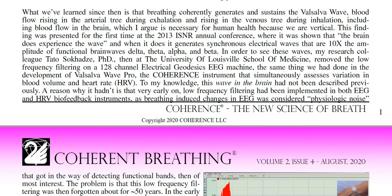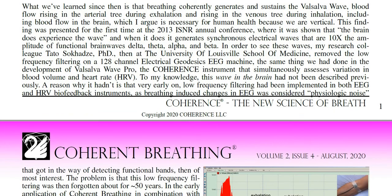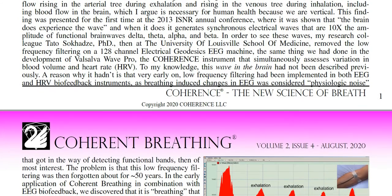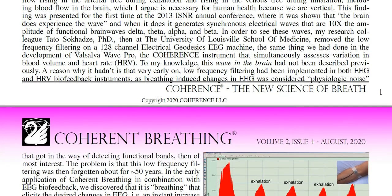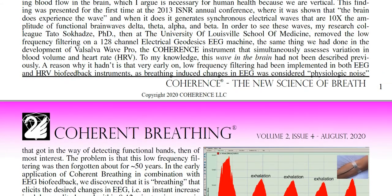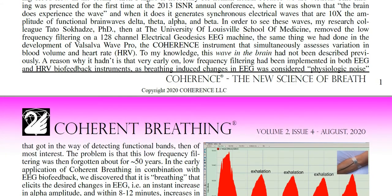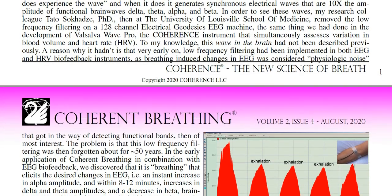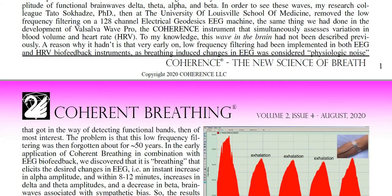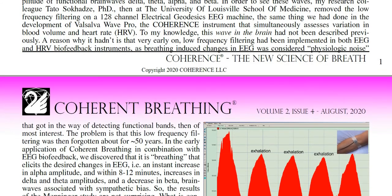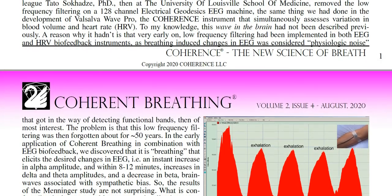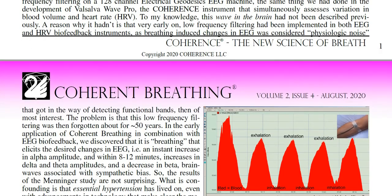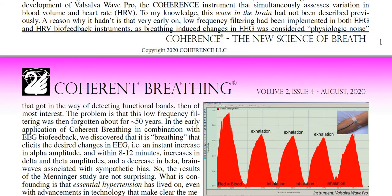In order to see these waves, my research colleague Tato Sokidze, PhD, then at the University of Louisville School of Medicine, removed the low-frequency filtering on a 128-channel electrical geodesics EEG machine — the same thing we had done in the development of Valsalva Wave Pro, the coherence instrument that simultaneously assesses variation in blood volume and heart rate (HRV). To my knowledge, this wave in the brain has not been described previously. A reason why it hadn't is that very early on, low-frequency filtering had been implemented in both EEG and HRV biofeedback instruments, as breathing-induced changes in EEG were considered physiologic noise that got in the way of detecting functional bands, then of most interest. The problem is this low-frequency filtering was then forgotten for about 50 years.